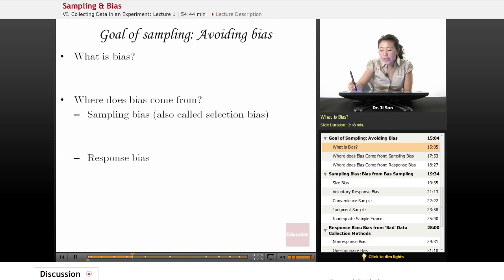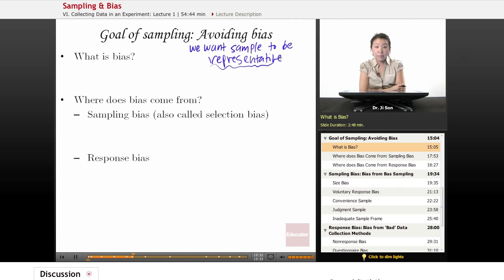And the whole reason is we want our sample to be representative of our population. Bias means that our sample is not representative.